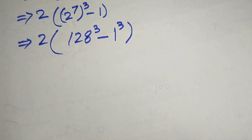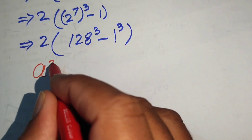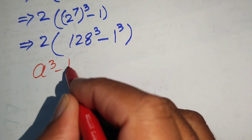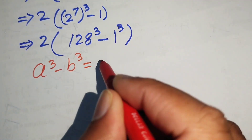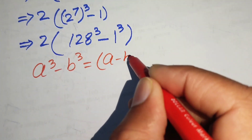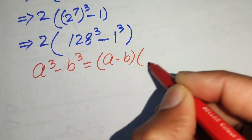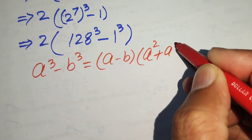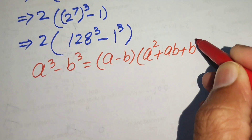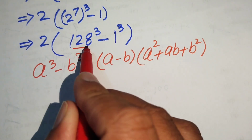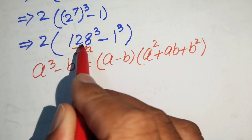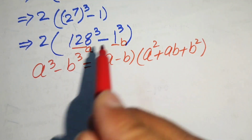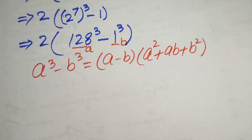Here we need to use the cubic formula. We know that a cubed minus b cubed equals a minus b, times a squared plus ab plus b squared. We apply this formula to our expression.